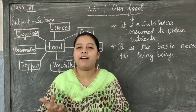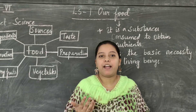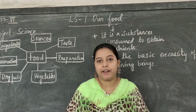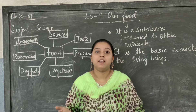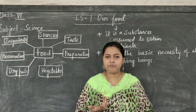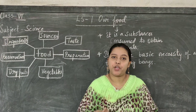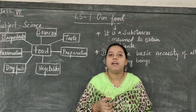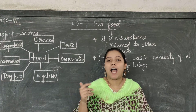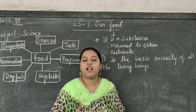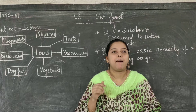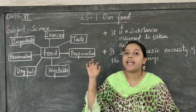Everyone has a favorite color, and in the same way everyone has a favorite food. Some will like biryani, some pulihara, some pie, some sweets, some gulab jamun, etc. Your mother will prepare all these for you. But have you ever thought about what materials are being used to prepare these items? In this chapter you are going to learn about ingredients.